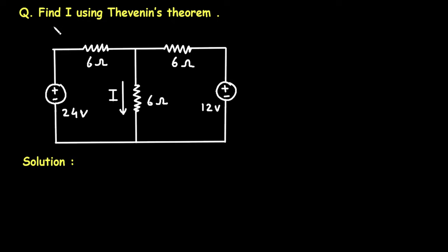Question: Find I using Thevenin's theorem. Here in this circuit, we have to find the value of this current I by using Thevenin's theorem.